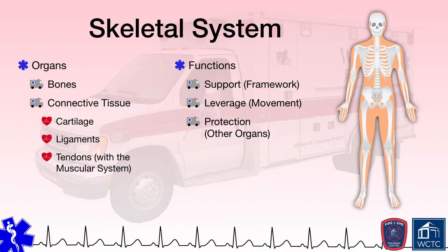Many of the organs within our body are relatively soft and, without some type of protection, would be easily damaged by external forces. Our bones provide much needed protection for our various internal organs like the brain, heart, lungs, spleen, kidneys, and so on. The skull, vertebrae, rib cage, and pelvic girdle all form protective cages to protect the organs that lie within them.